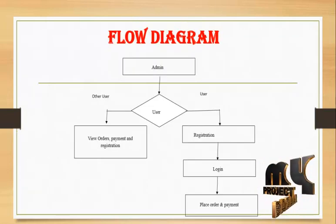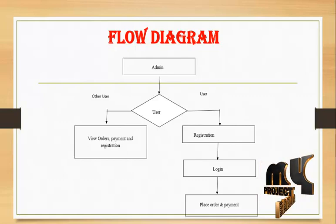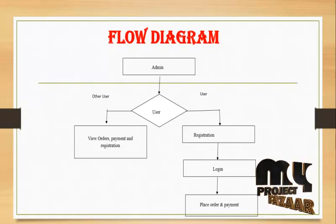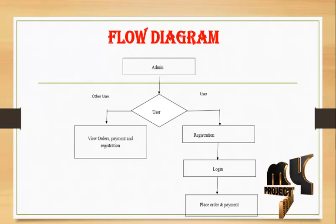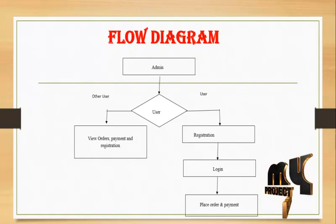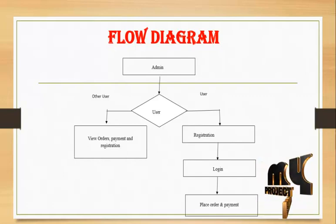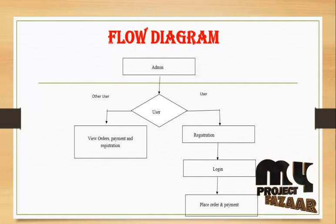Flow Diagram: Admin goes to the user, and then the user registers, logs in, and places the order and payment. The admin user and the user goes to another user. It views the order, payment, and registration.